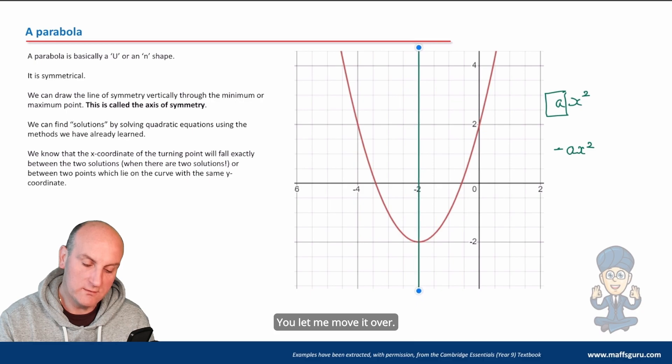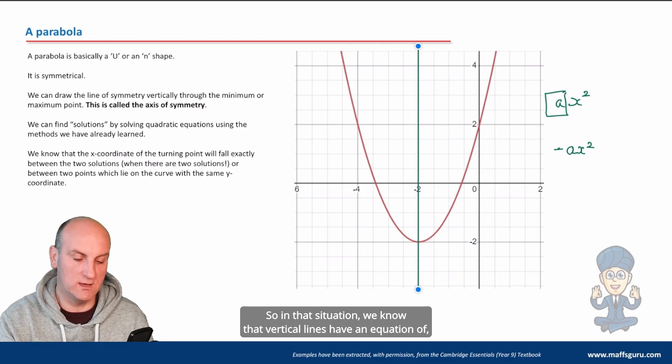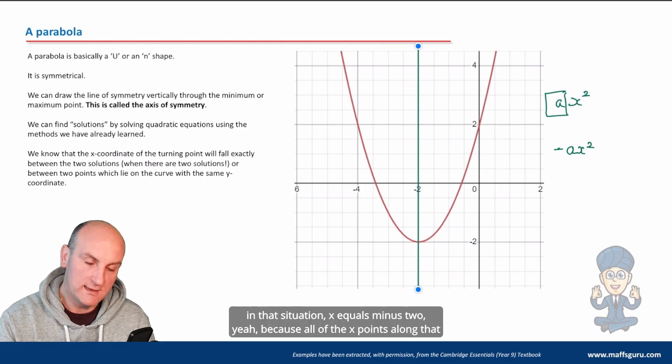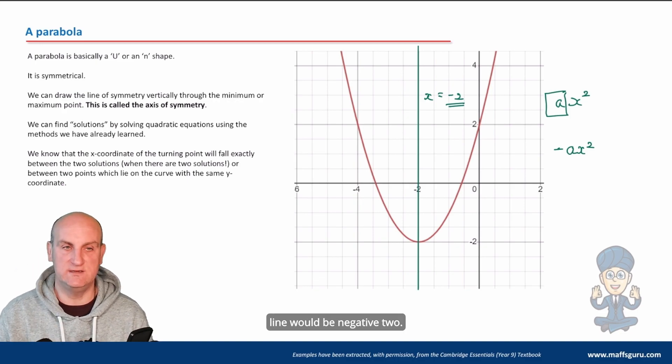In that situation, x equals minus two. All of the x points along that line would be negative two, and remembering all this stuff becomes really really important.